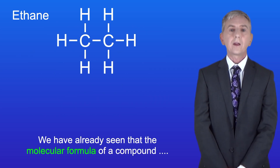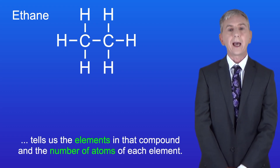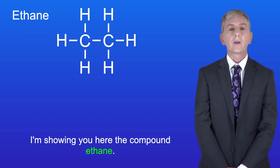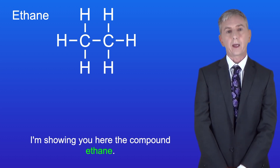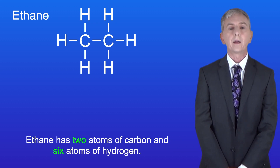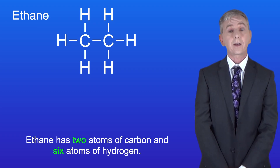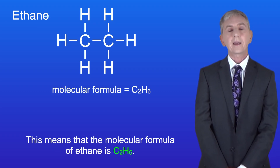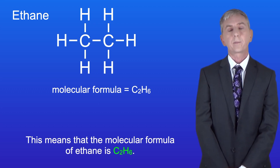Now we've already seen that the molecular formula of a compound tells us the elements in that compound and the number of atoms of each element. I'm showing you here the compound ethane. Ethane has two atoms of carbon and six atoms of hydrogen. This means that the molecular formula of ethane is C2H6.